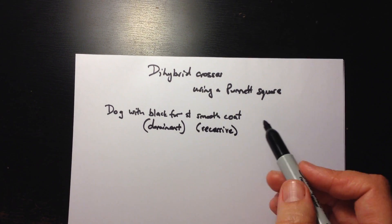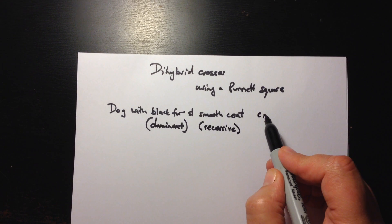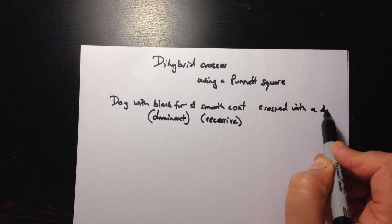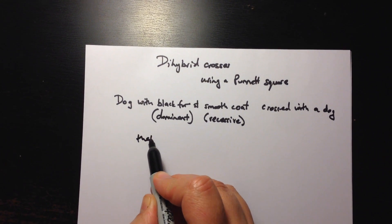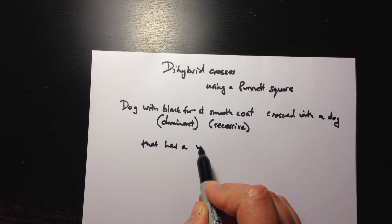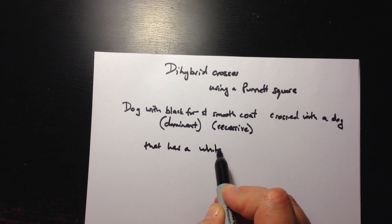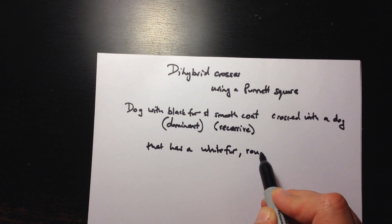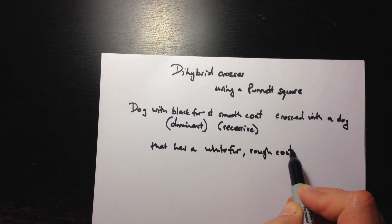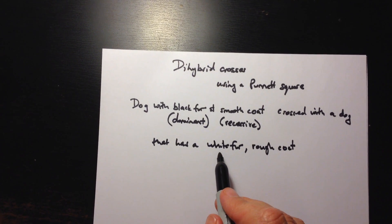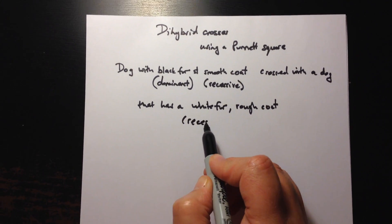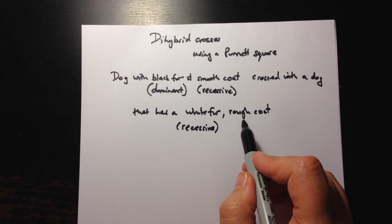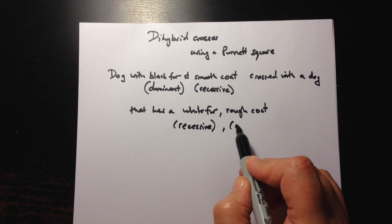Now let's imagine we are crossing this dog with a dog that has white fur and a rough coat in texture. White fur is the recessive trait, whereas rough coat in this case is the dominant trait.